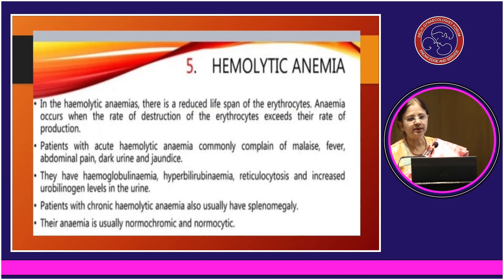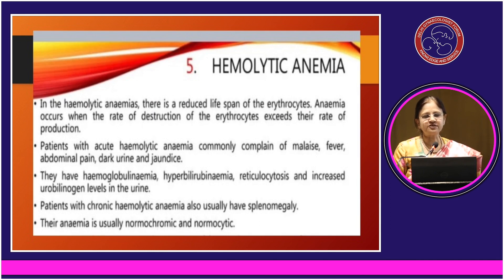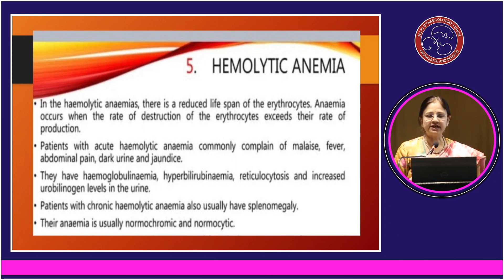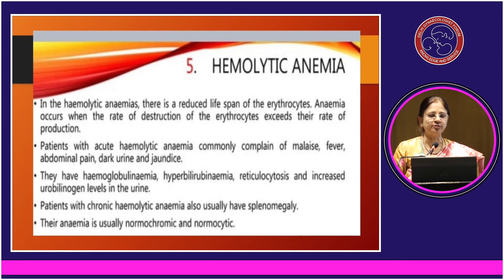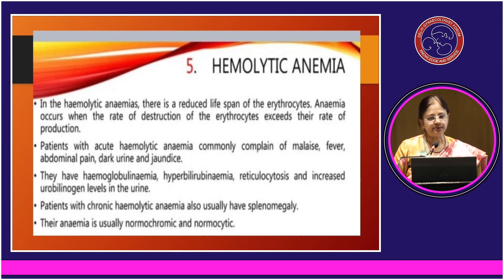Coming to hemolytic anemias — in these conditions, there is a reduced lifespan of erythrocytes. Anemia occurs when the rate of destruction of erythrocytes exceeds the rate of production, the normal lifespan being 120 days. Patients with acute hemolytic anemia usually complain of malaise, fever, abdominal pain, dark urine due to hemoglobinuria, and jaundice. Patients with chronic hemolytic anemia have hepatosplenomegaly, and the anemia is usually normochromic and normocytic.